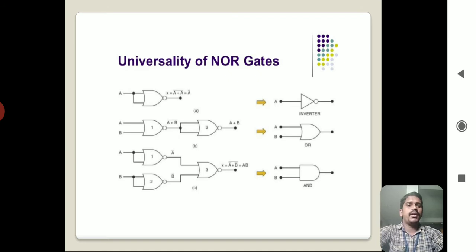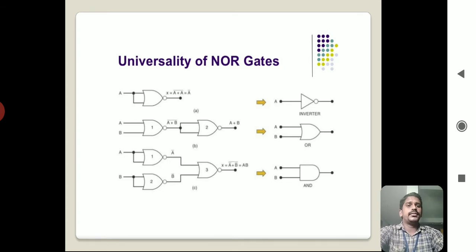First, convert NOR gate into a NOT gate. A NOR gate with a single input gives output A-bar, that is, the complement of A. In a two-input NOR gate, the two input lines are connected together and treated as a single input, making it a single-input NOR gate. Then the output will be A-bar. Hence the NOR gate acts as a NOT gate.